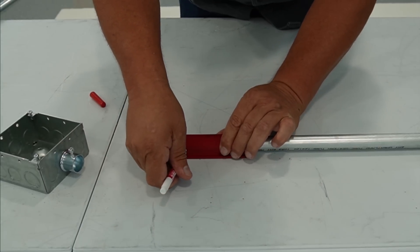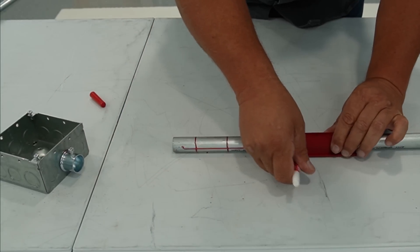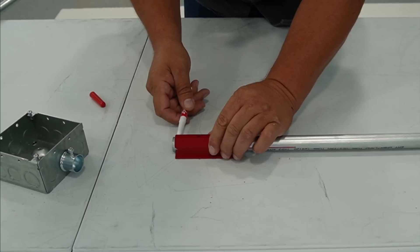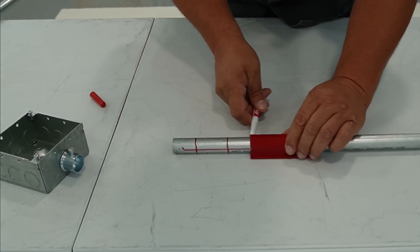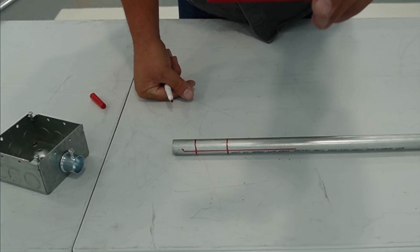Scribe the line. Scribe the line on the other side. Now I have both my bend marks and the orientation.